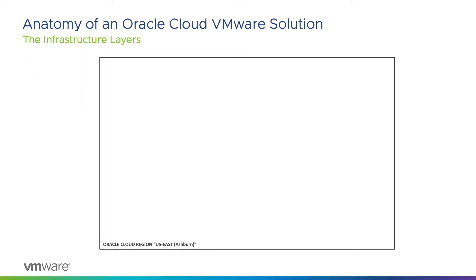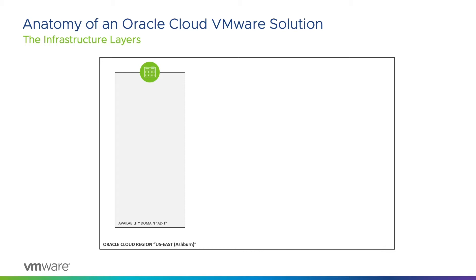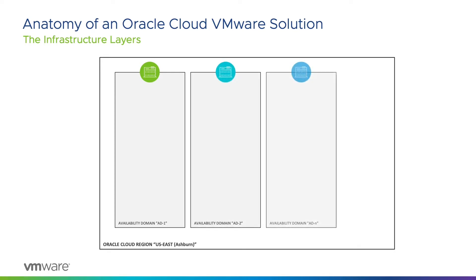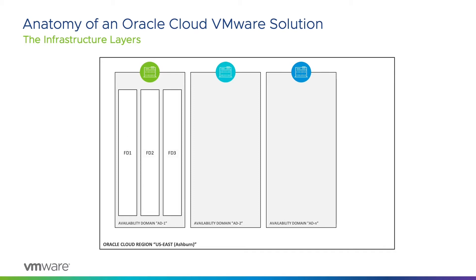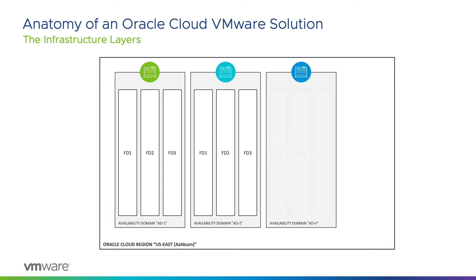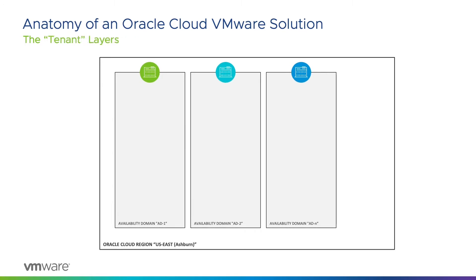Let's start with a region. A region, according to Oracle, is a localized geographic area. The physical locations within a region are called availability domains, and each availability domain is made up of one or more data centers located within that region. These are similar to availability zones in some other hyperscaler cloud services. Within each availability domain are groupings of hardware and infrastructure which collectively make up a fault domain. Each availability domain contains three fault domains, which together provide anti-affinity locations within that availability domain.